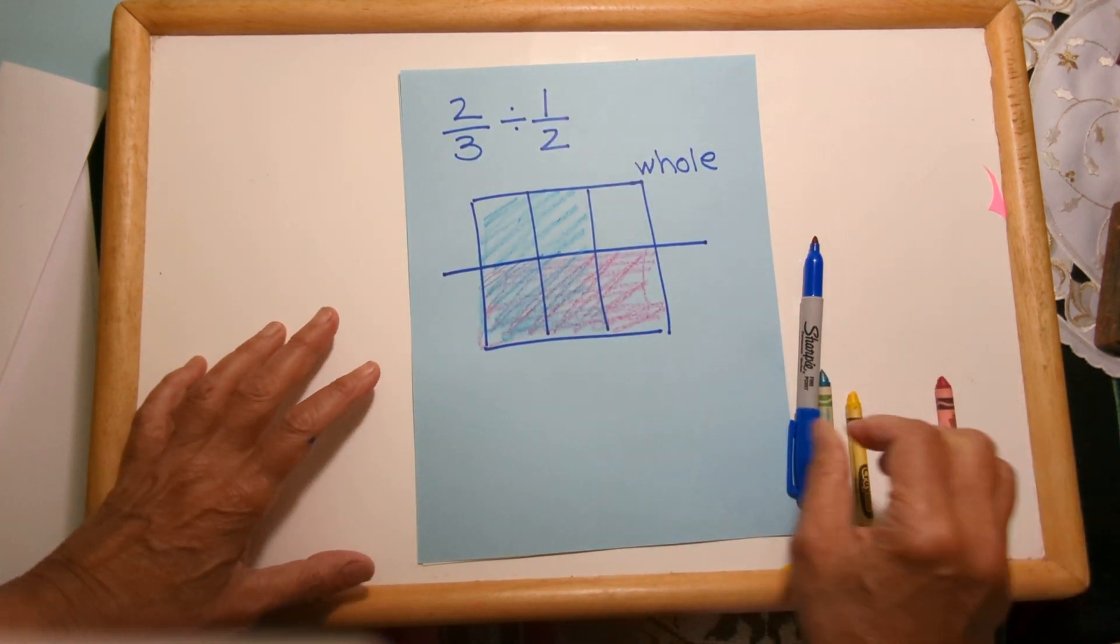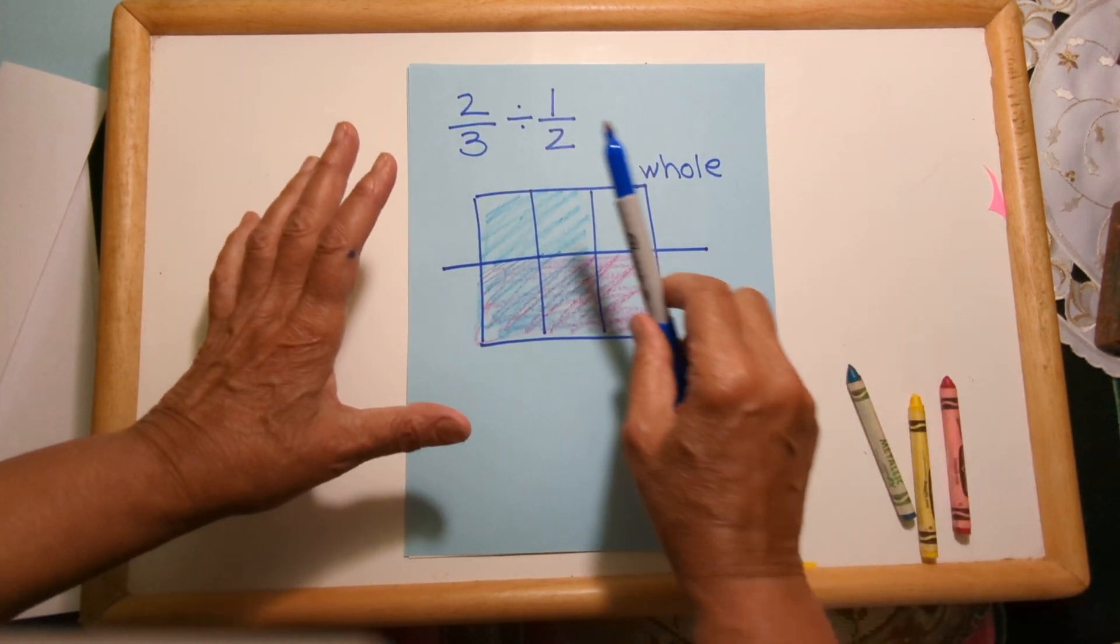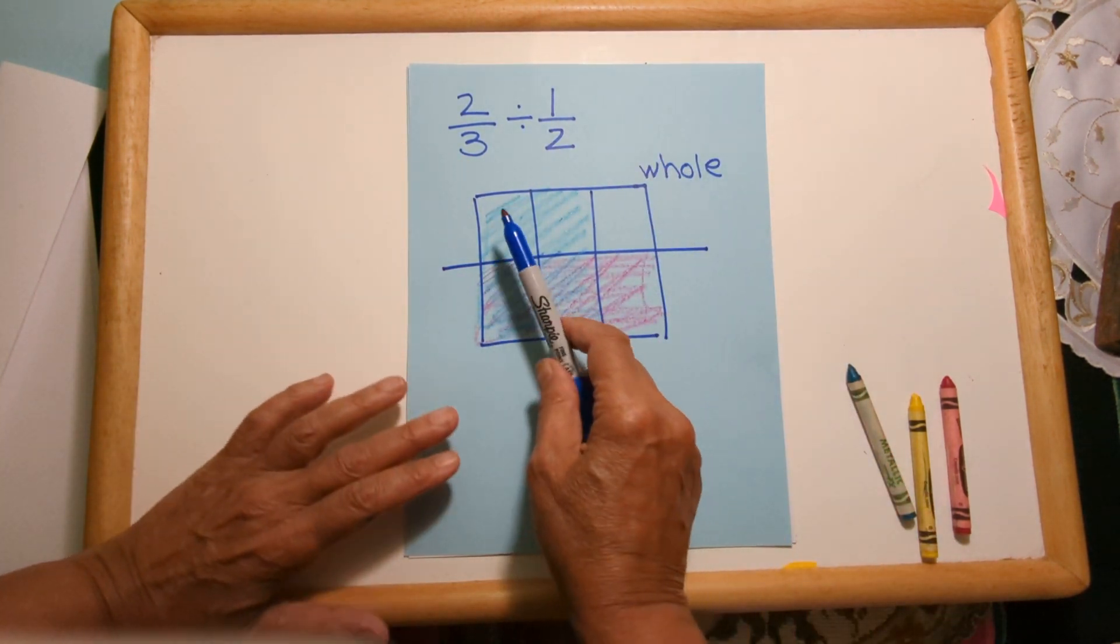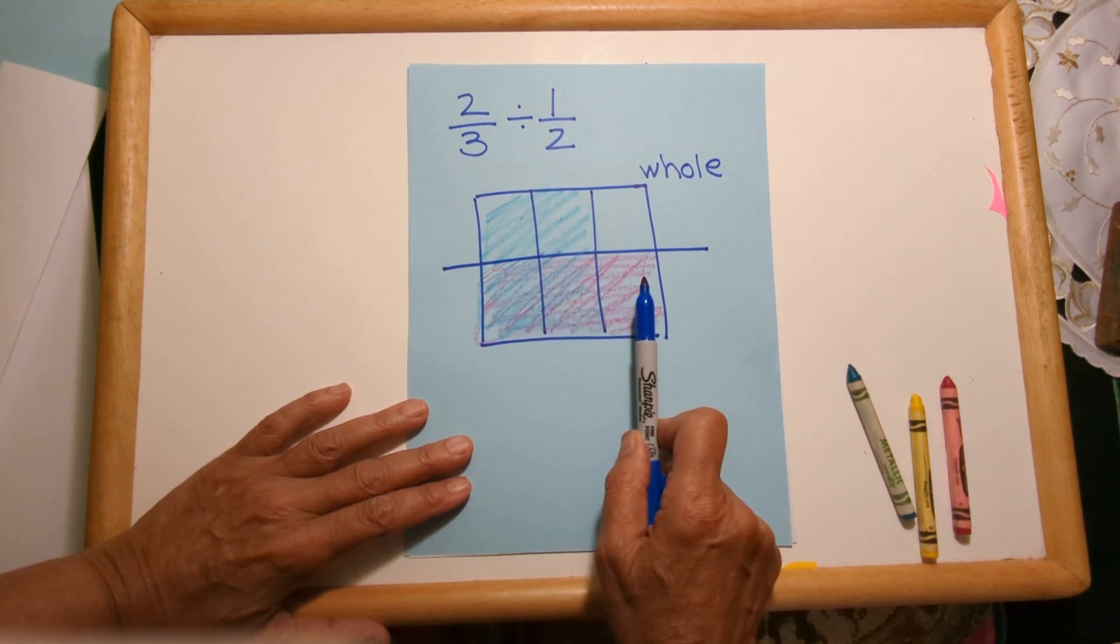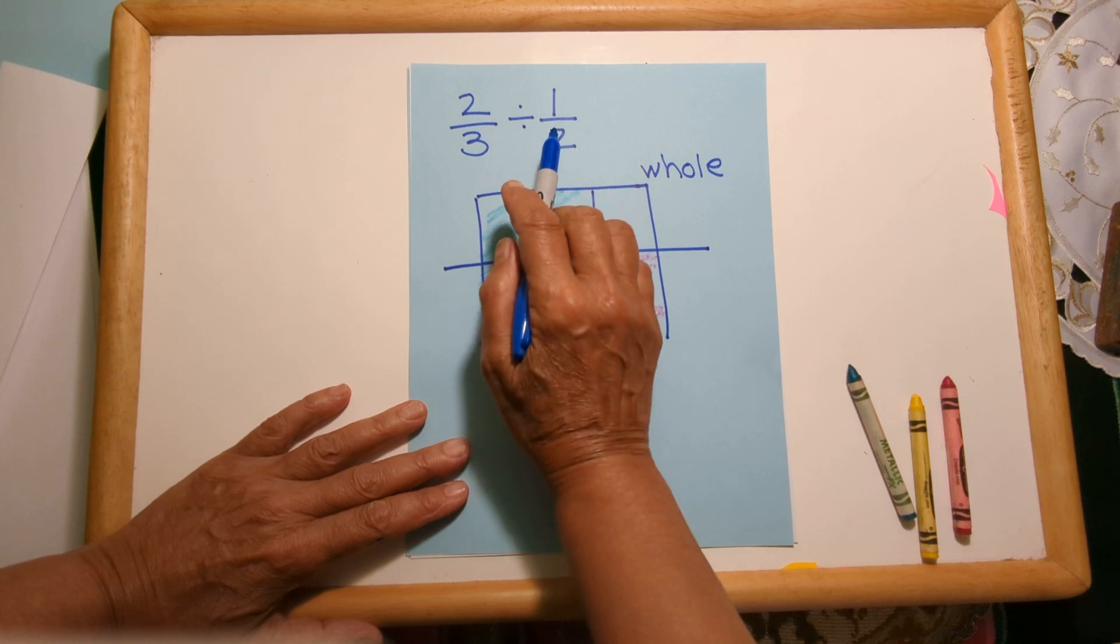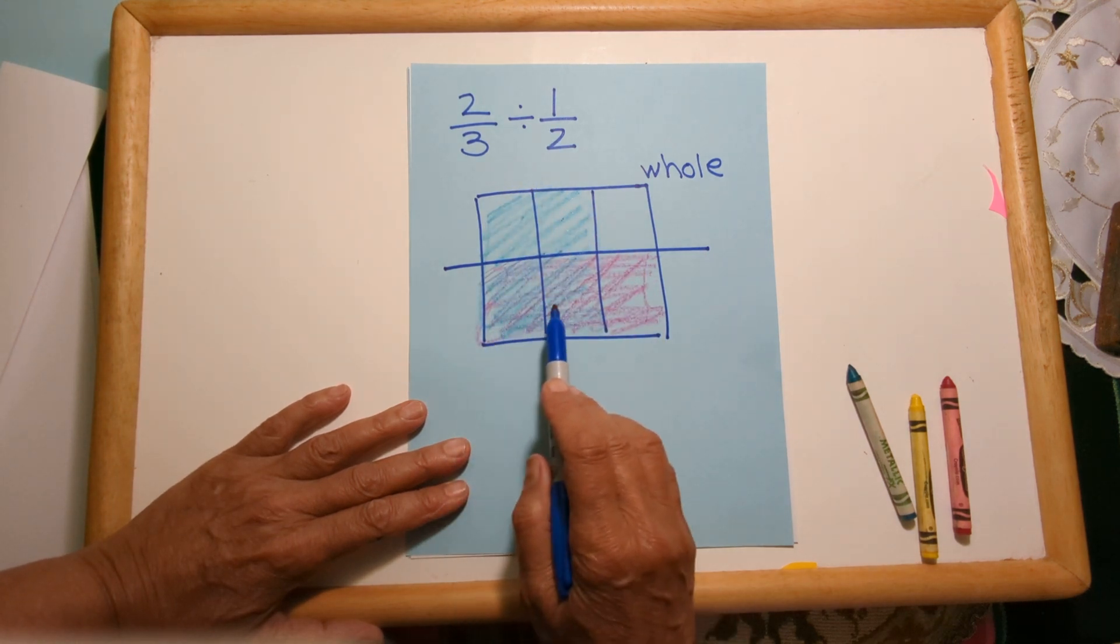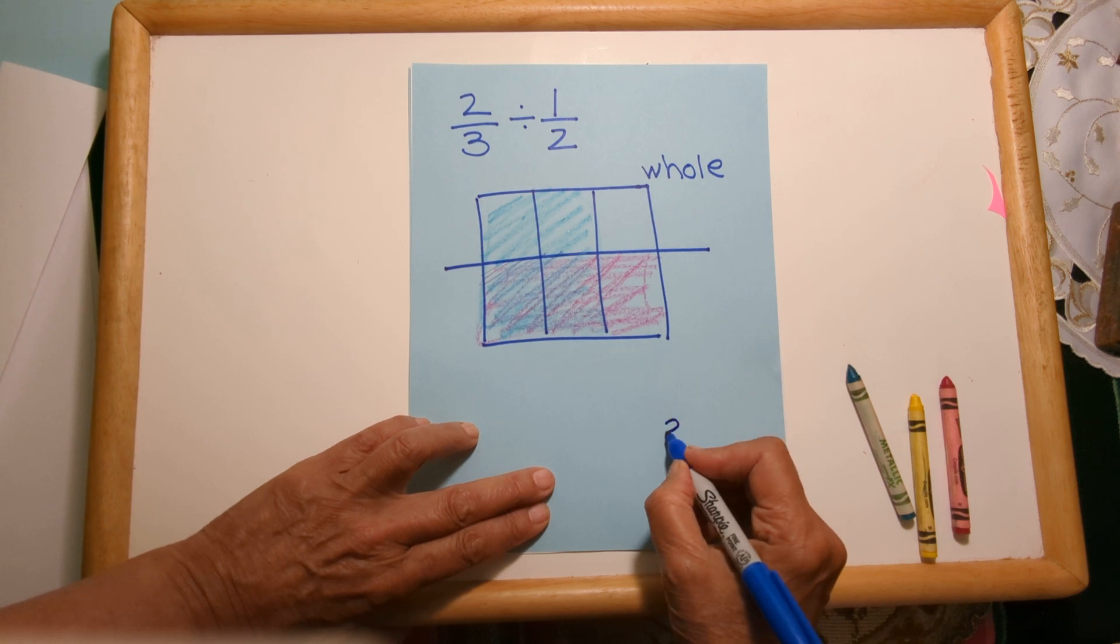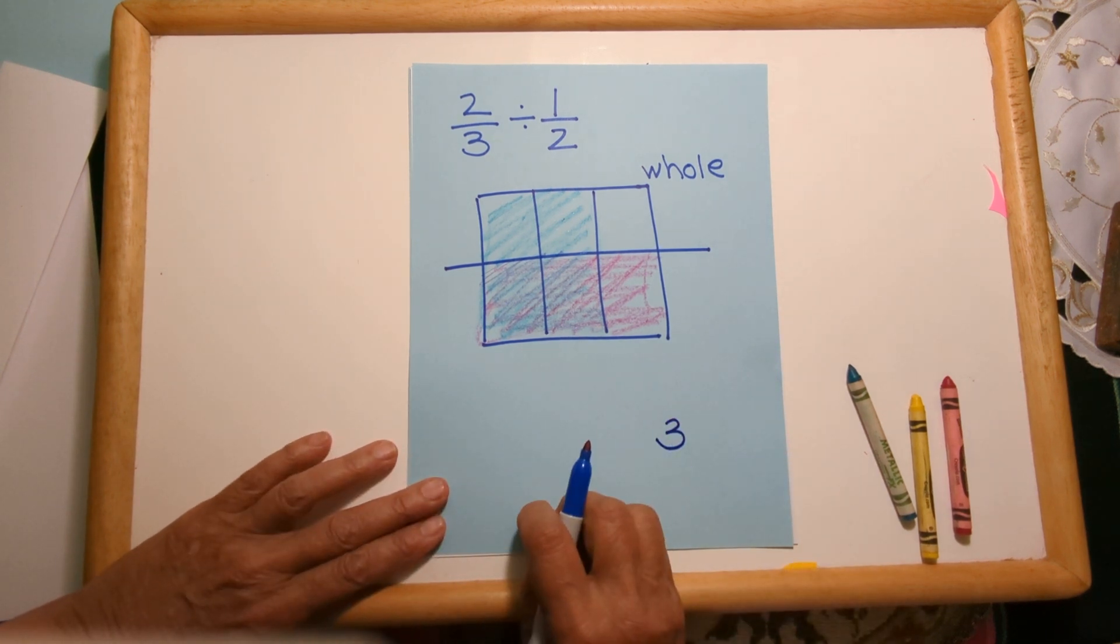So the way I've now overlaid the two-thirds on top of the one-half inside of the whole is created a grid of six different pieces, and the one-half uses up one, two, three of those pieces, and that's important—that number is going to be important—uses up three of those pieces.